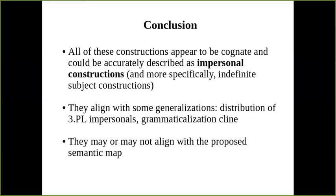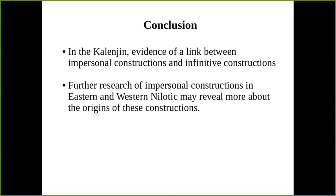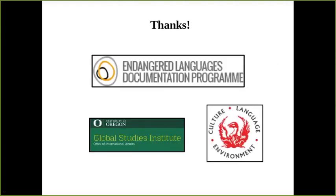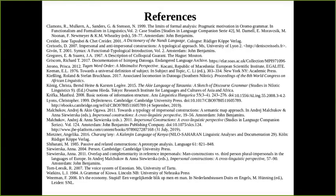In conclusion, I argue that all of these constructions appear to be cognate and could be accurately described as impersonal constructions — more specifically, indefinite subject constructions. They align with some of the generalizations from the typological literature on impersonal constructions, such as the distribution of third-person plural impersonals in European languages and the grammaticalization cline. They may or may not align with the proposed semantic map, and further research is necessary. In Kalenjin, there is also an interesting link between impersonal constructions and infinitive constructions, and further research of impersonal constructions in other Nilotic branches might reveal more about the origins. Thank you very much — I will now show my references while I answer any questions.